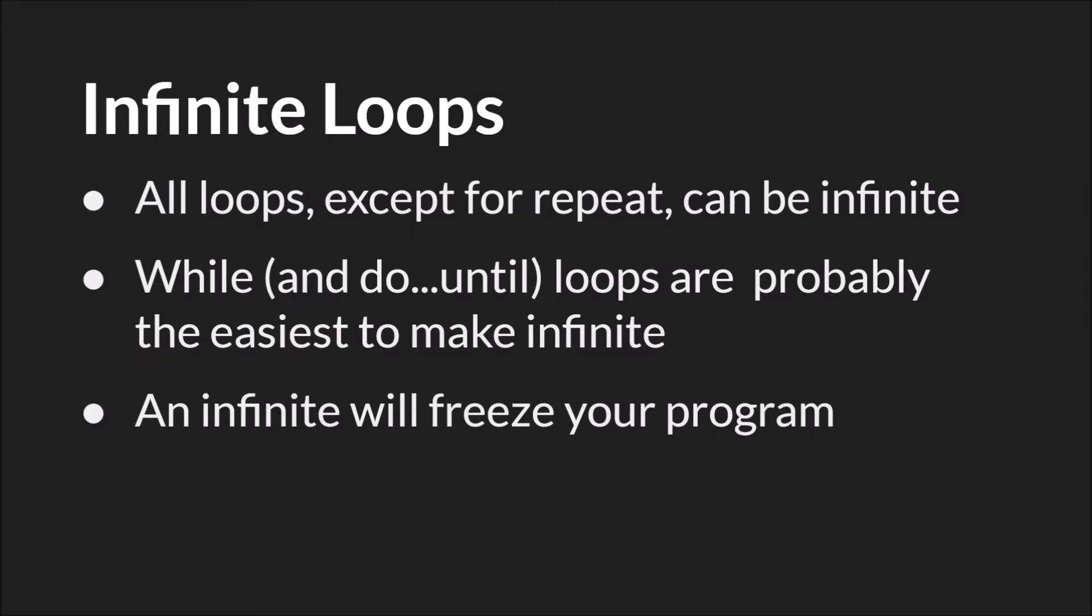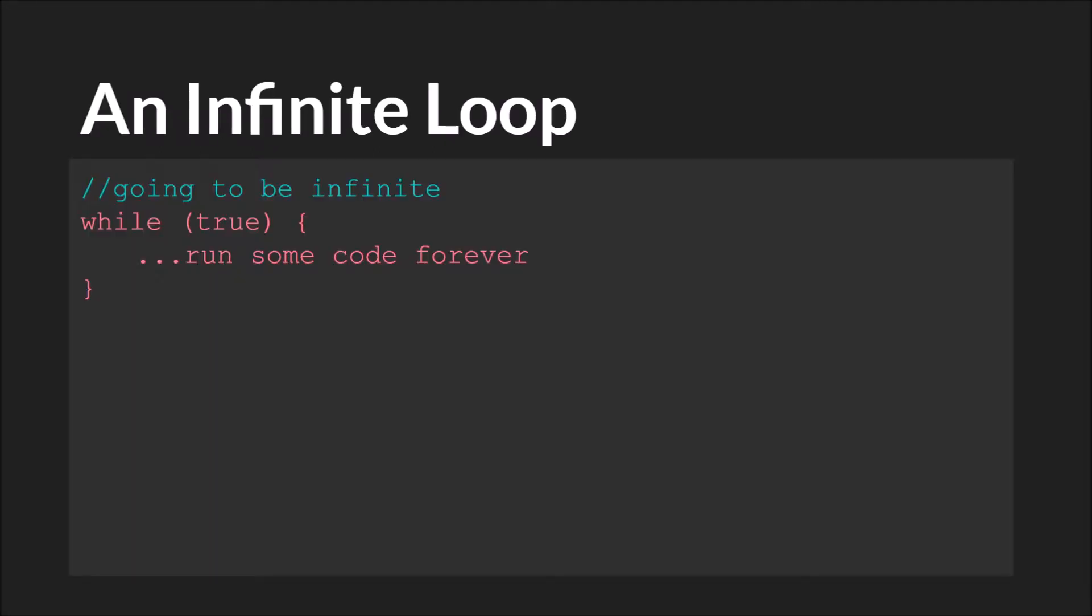As mentioned before, all loops, except for the repeat loop, can be infinite. While and do until loops, which we'll talk about in a moment, are the easiest to make infinite. And an infinite loop will freeze your program. A simple example of an infinite loop is this. True is always going to evaluate to true, and thus this code is going to run forever.